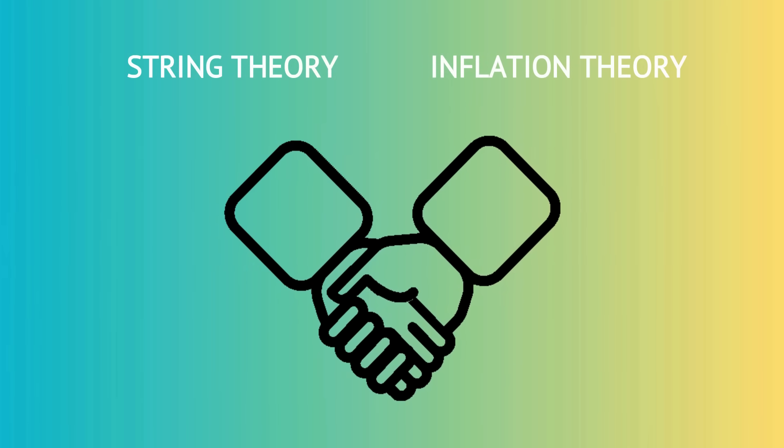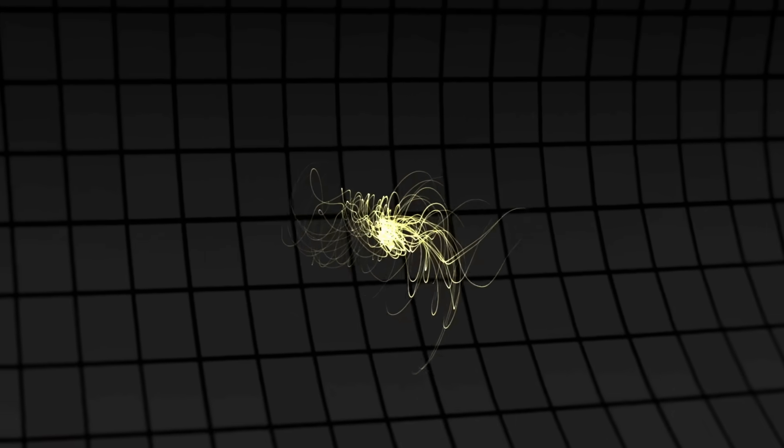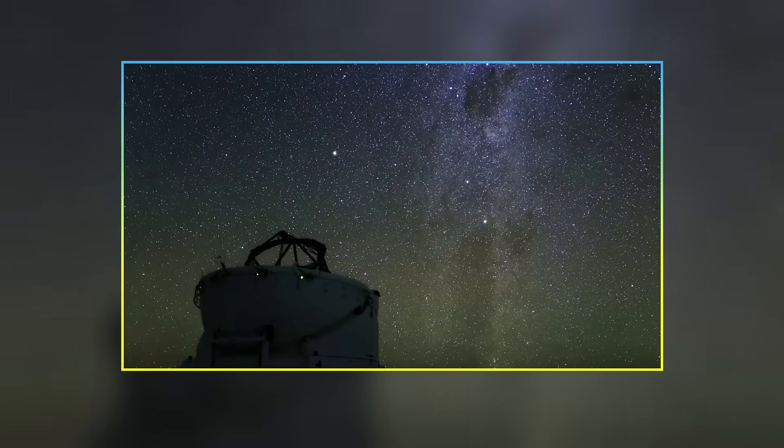However, together, these two ideas suggest that the universe is super complicated when you look closely and very chaotic from a macro perspective. Well, that does not coincide with observations.